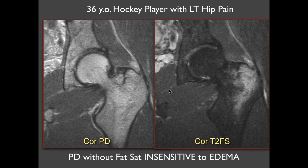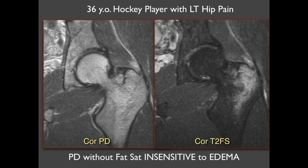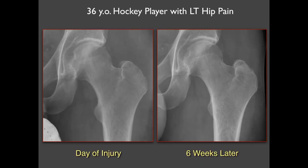One thing to point out: in our routine hip protocol for pain assessment, we often do coronal proton density images without fat suppression to look at cartilage and the joint — but that's actually not a very good sequence for fractures. It's much harder to see the fracture on that image compared to T1-weighted or fat-suppressed T2-weighted images, which are quite good. He was treated non-operatively. Follow-up images showed a lucency and a little sclerosis at the fracture site, but no femoral neck fracture.